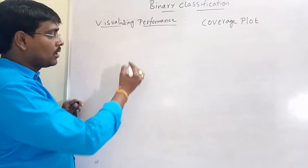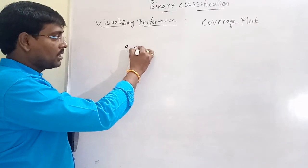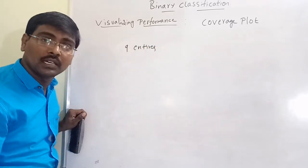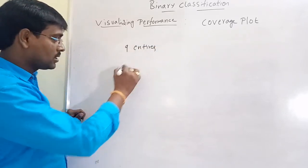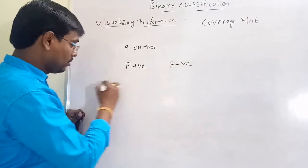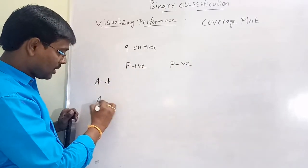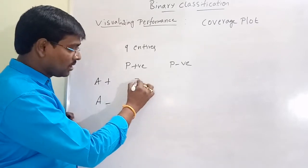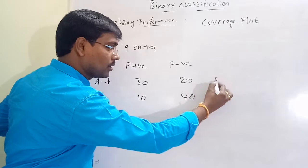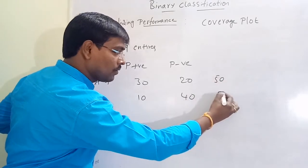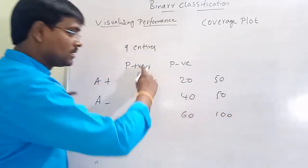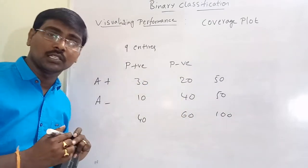We already know how the confusion matrix works. The confusion matrix contains 9 entries — predicted positive, predicted negative, actual positives, actual negative. For example, the values are 30, 20, 10, 40, 50, 50, 40, 60, 100. This is the confusion matrix or contingency table.